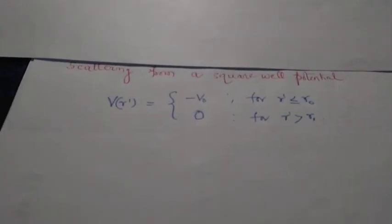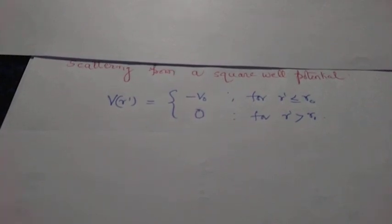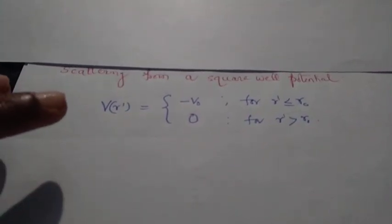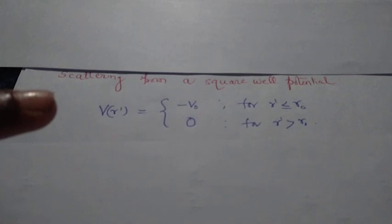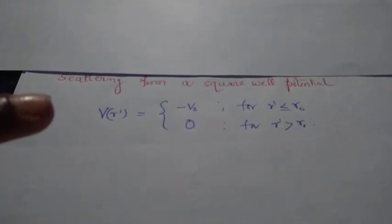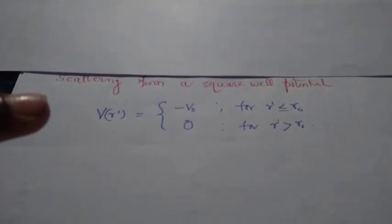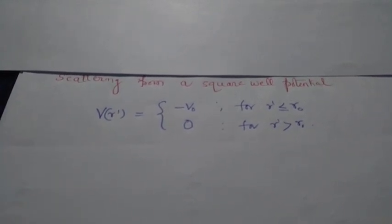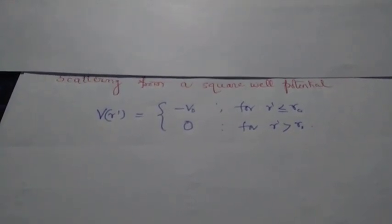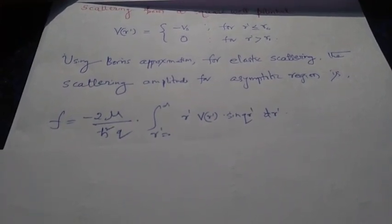The topic of the video is scattering from a square well potential. The square well potential is defined as V(r') equals minus V-naught for r' less than or equal to r-naught, some fixed radius, and it is zero for r' greater than r-naught.